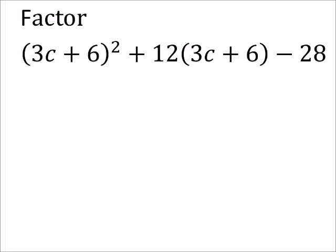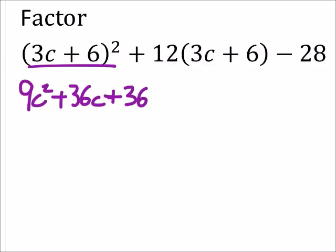All right, so I'm going to skip some steps just purely for the sake of time. 3c plus 6, we need to square that, right? So that should give us 9c² plus 36c plus 36. That seems odd, but it seems like it would work.